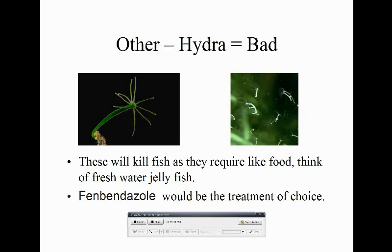I'm not going to cover things you can't see, like gill flukes — they're about 0.5 millimeters. Unless you have a dead fish or can clearly see something around a fish's gills, I can't help with near-microscopic parasites, so I'm leaving those out of this overview.